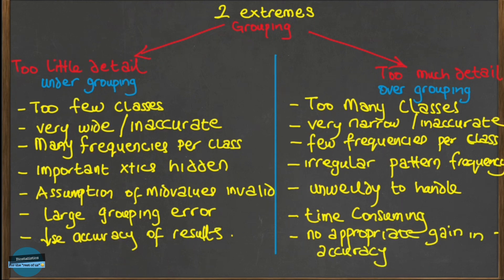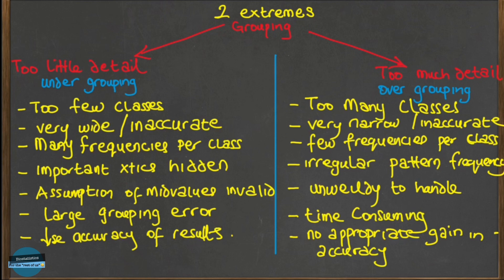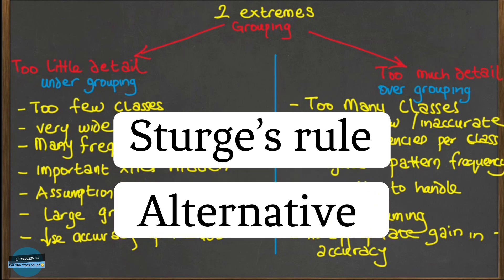As a researcher, you should always strike a balance between these two extremes. Statisticians have helped us with a fairly objective way of arriving at the optimum number of classes using a very intuitive rule called the Sturges rule, as well as another simple alternative to it. In my next video, I will be explaining how to use these to quickly arrive at a reasonable number of groups when grouping your data.